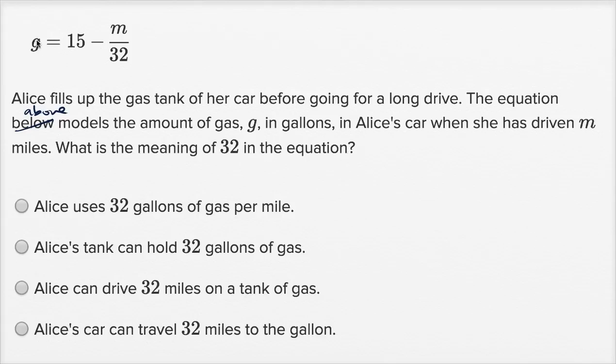Alright, let's look up here. This is the gallons that she has left in her car. And what's going on here? So it makes sense that when m is zero, when she's driven nothing, she's going to have 15 gallons in her car. And then as you drive more and more, you're going to subtract more and more gallons from her car. So this term right over here, this is the number of gallons used up.